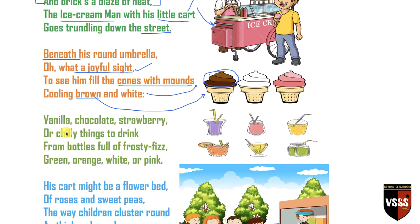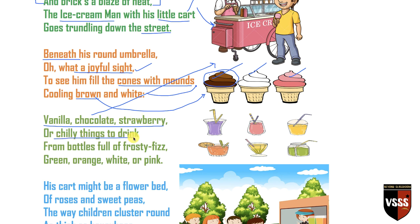'Vanilla, chocolate, strawberry, or chilly things to drink.' The ice cream man has a lot to offer. The poetess tells us about the different flavors and things this ice cream cart has — vanilla, chocolate, and strawberry. Vanilla is the white one, strawberry is the pink one, and chocolate is the brown one. And besides ice cream, the ice cream man also has chilly things to drink — 'from bottles full of frosty fizz, green, orange, white, or pink.' These are very chilled and icy drinks that look beautiful and taste good.